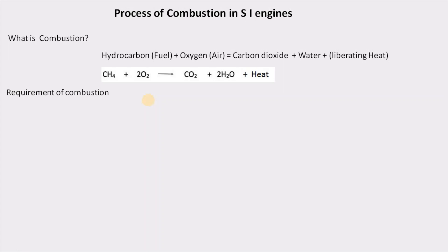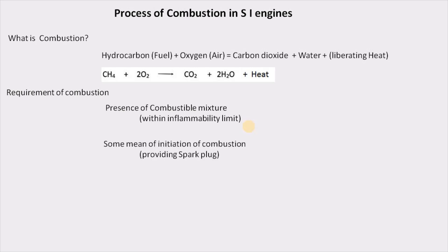In order for this combustion process to happen properly, some requirements must be satisfied. The first requirement is the presence of a combustible mixture — the mixture supplied to the SI engine should be within the inflammability limit, because the mixture is able to burn only if it is within that limit. If it is on the leaner or richer side, it is unable to burn. After supplying this mixture, we need a means of ignition — a spark plug — which provides a spark to burn the mixture wherever the spark is produced.